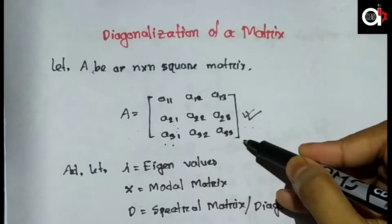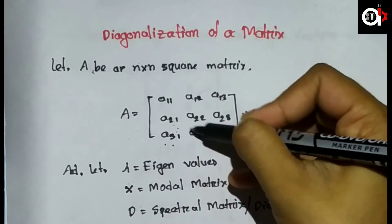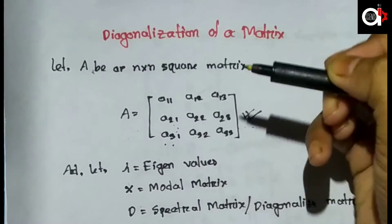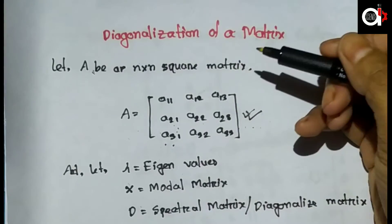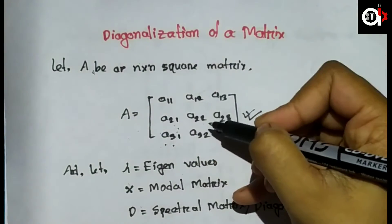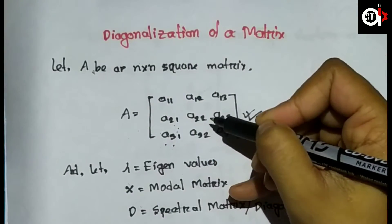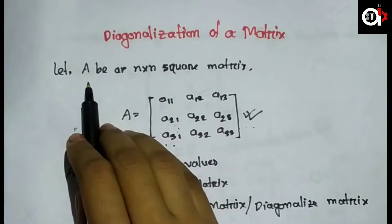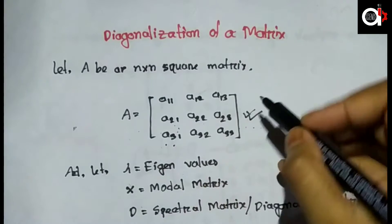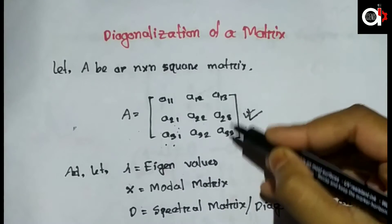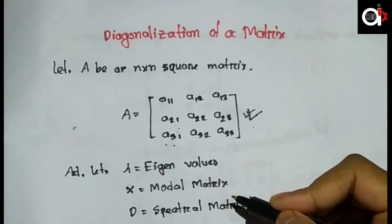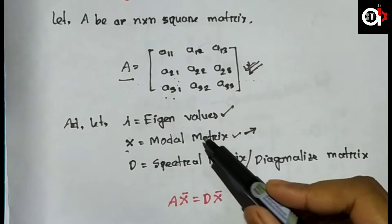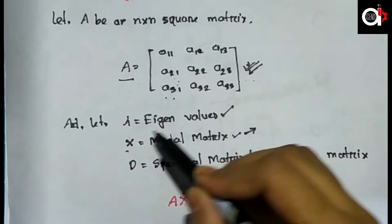Diagonal meaning — what is a diagonal matrix? For an N×N matrix A, to diagonalize means to find the diagonal form of that matrix.